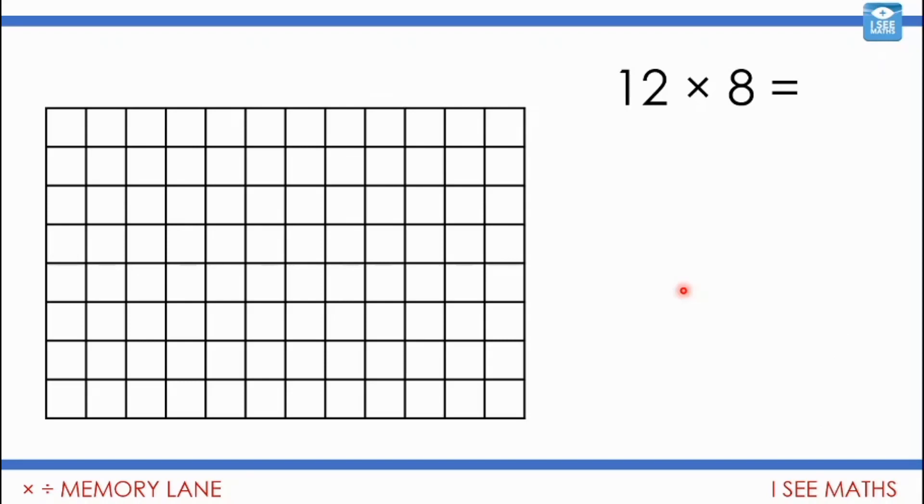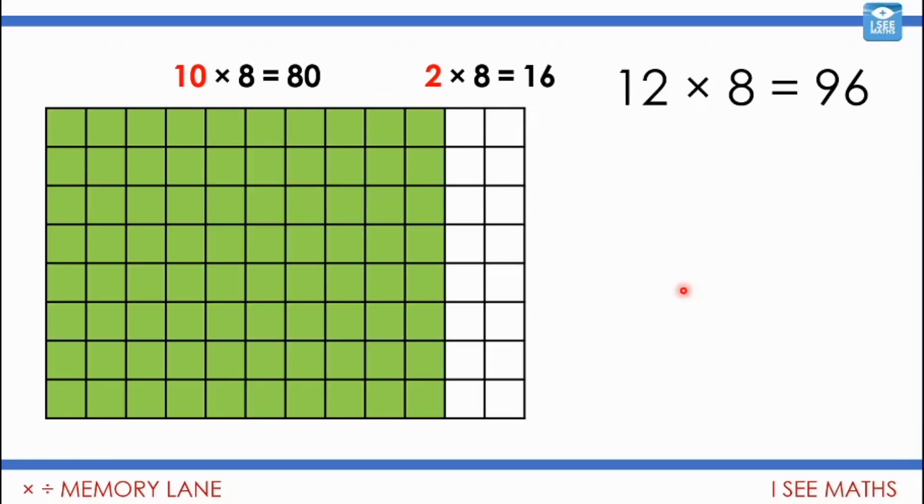Let's have a look at some possibilities. The most normal way is we could split the 12 up into 10 and 2: 10 times 8 and 2 times 8, add it all together. One of my favorites is six eights and another six eights. In total that's 12 lots of 8, so we just need to double 48.